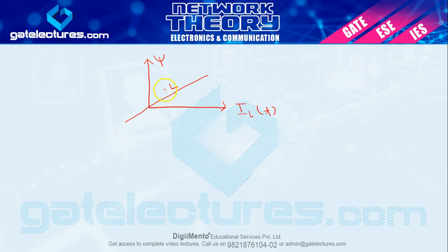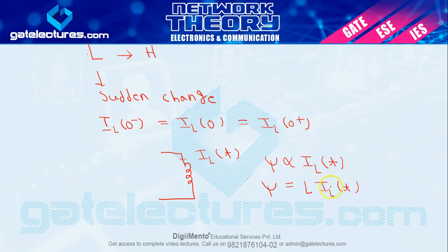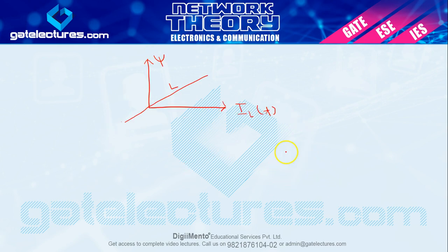An inductor is called a linear inductor when L is constant and independent of the time-varying current value, because L here is the proportionality constant. So the inductor value will always remain constant.